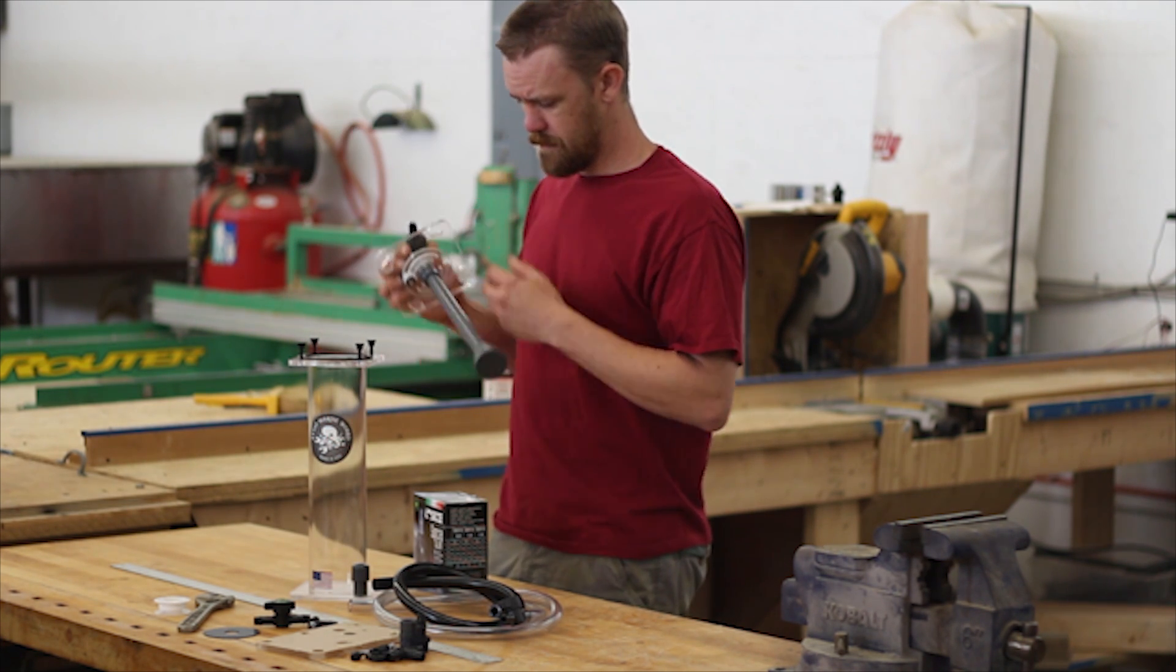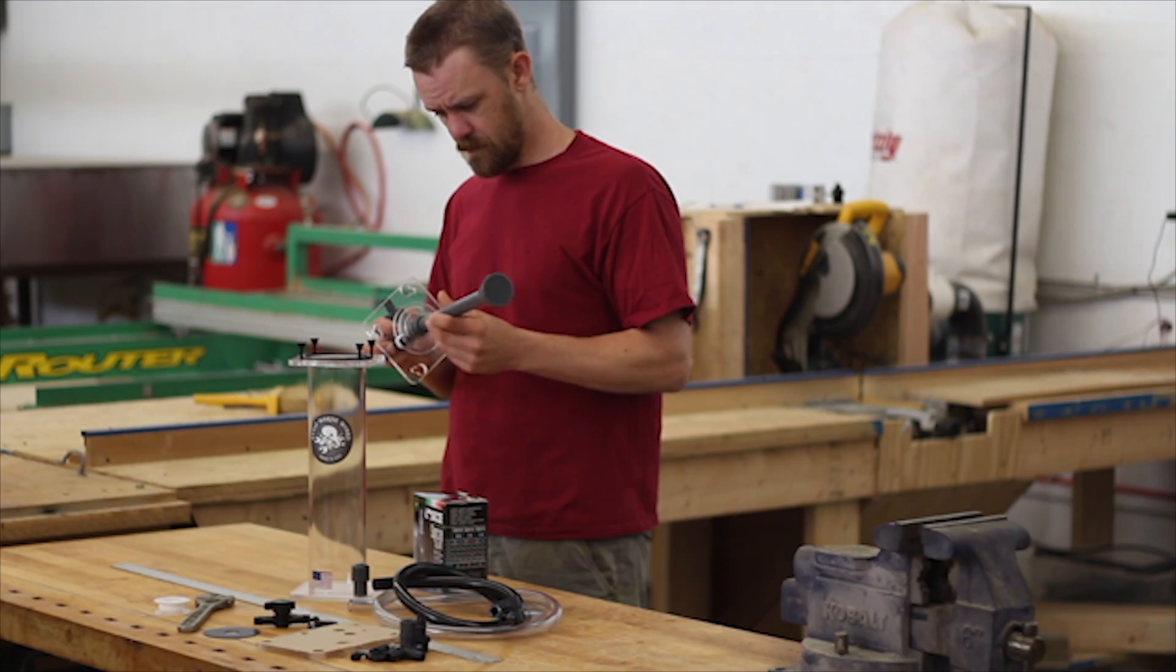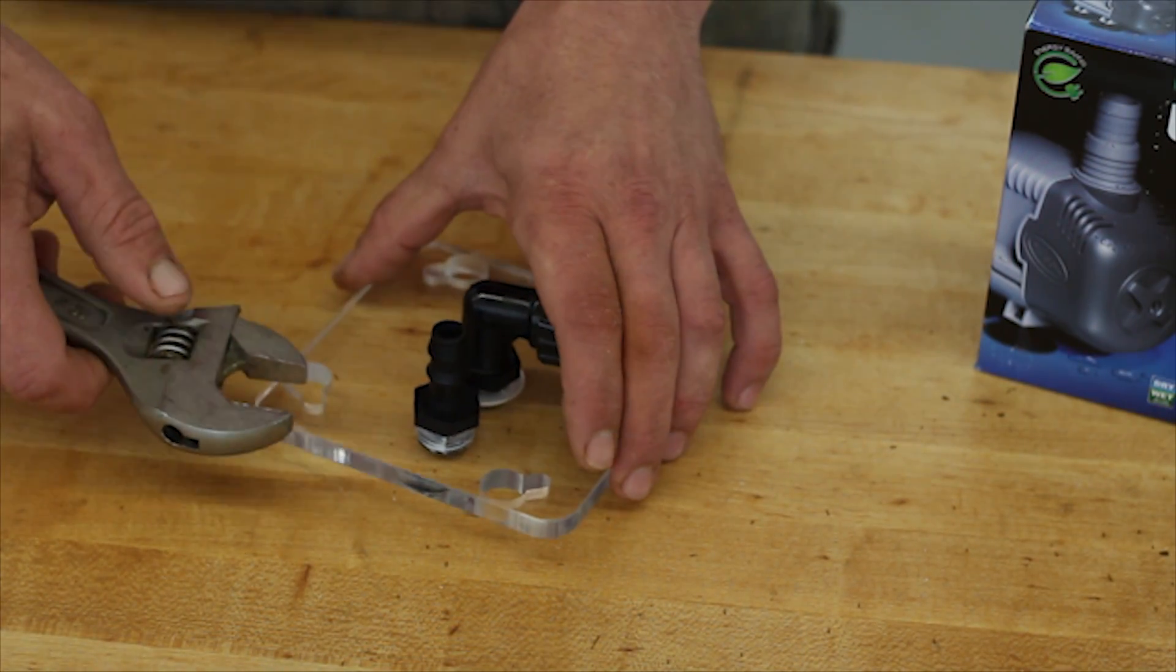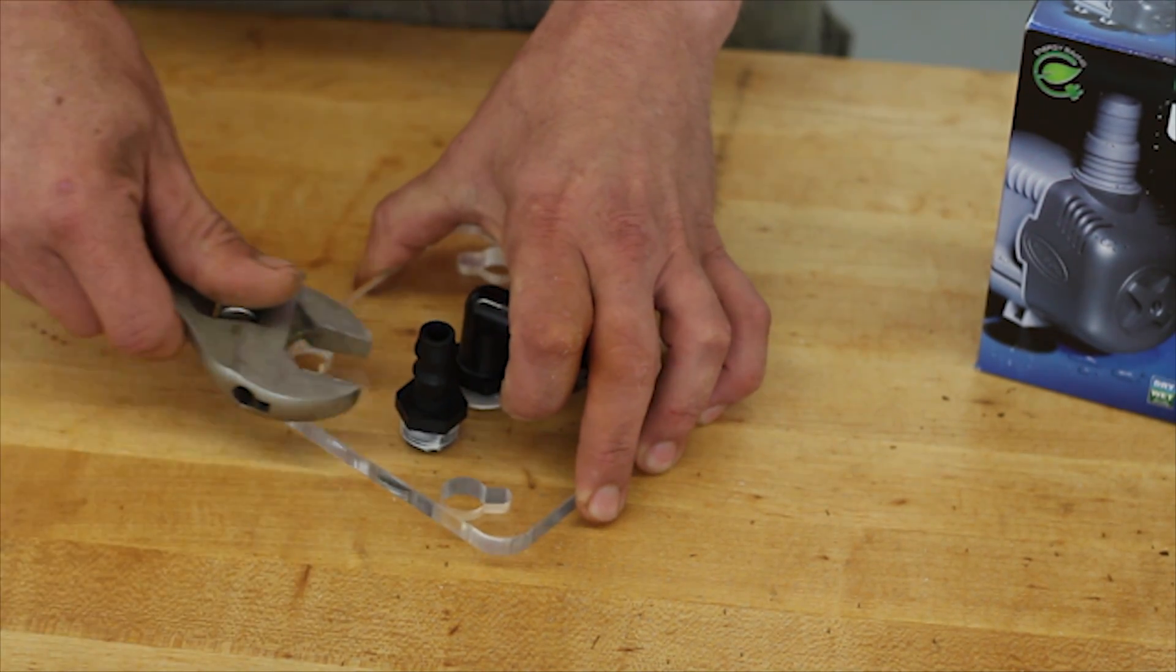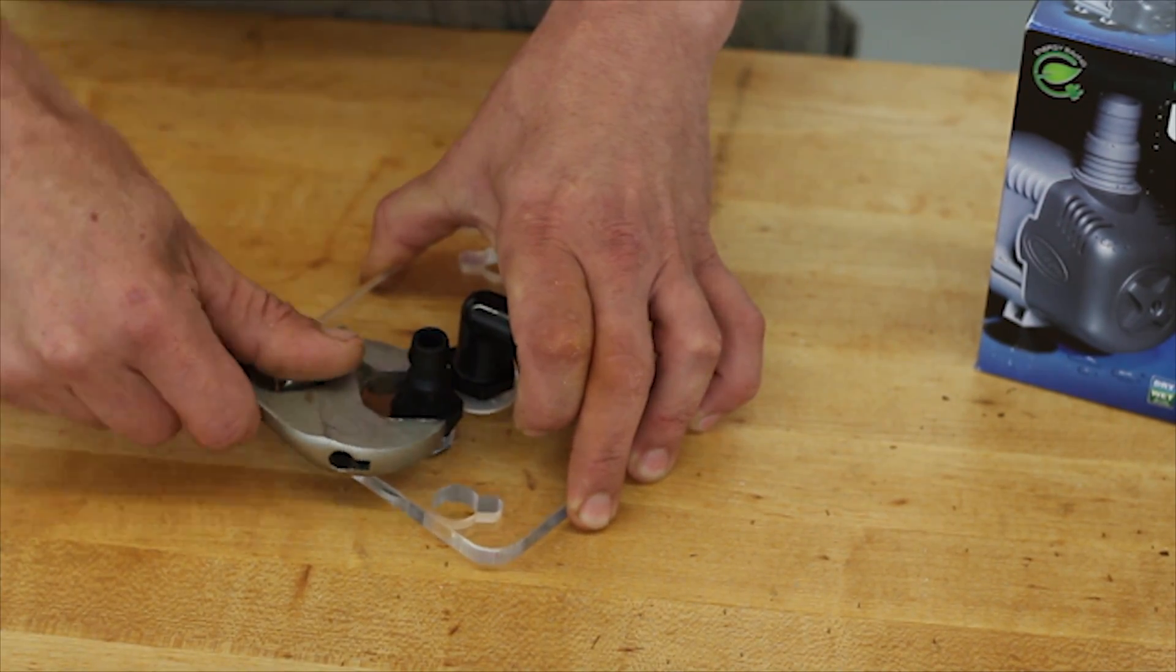First, we're going to remove the lid from the media reactor and take the down tube assembly off. On the MR5, we're going to remove the straight barb fitting and use this in the new lid. For the MR10 and MR16, you can skip this step.